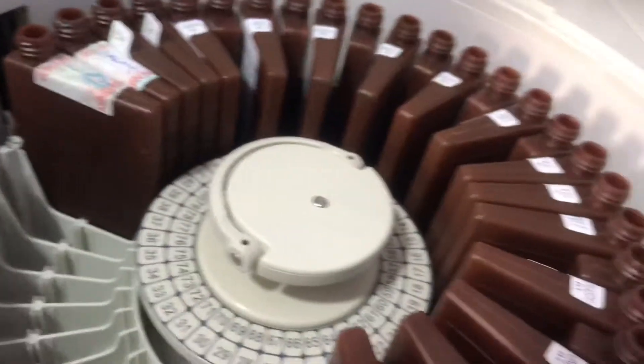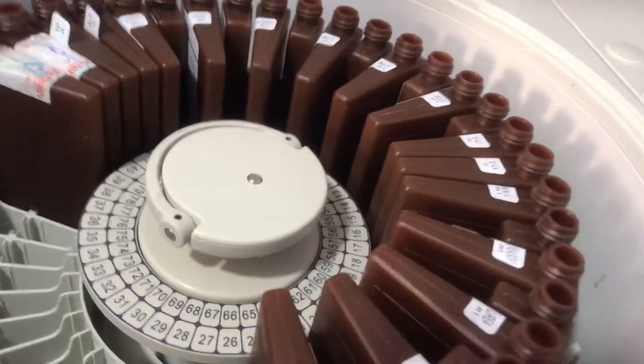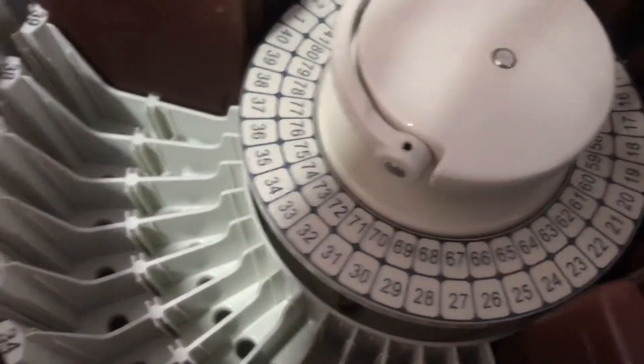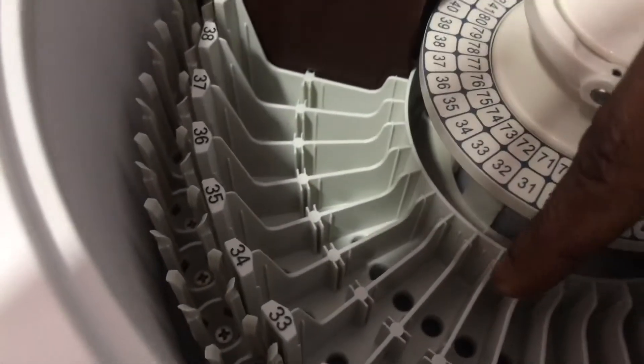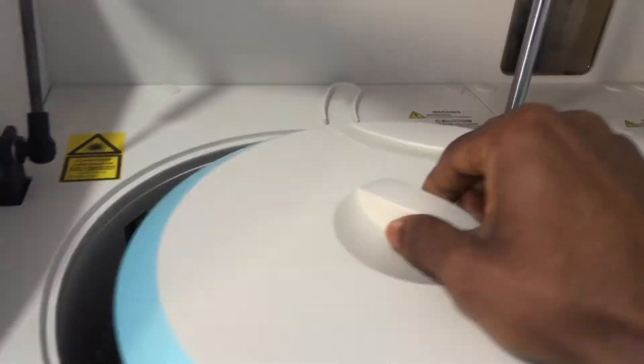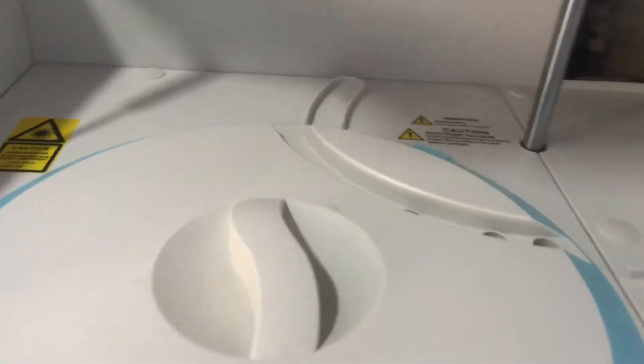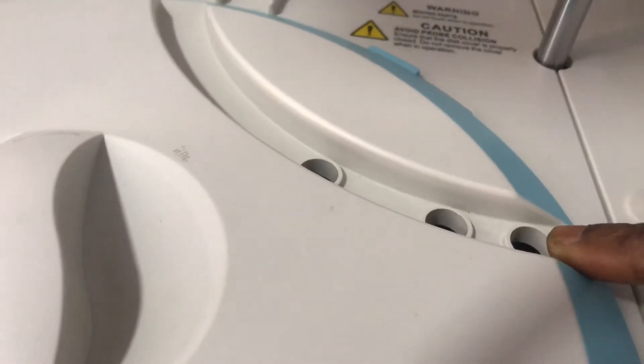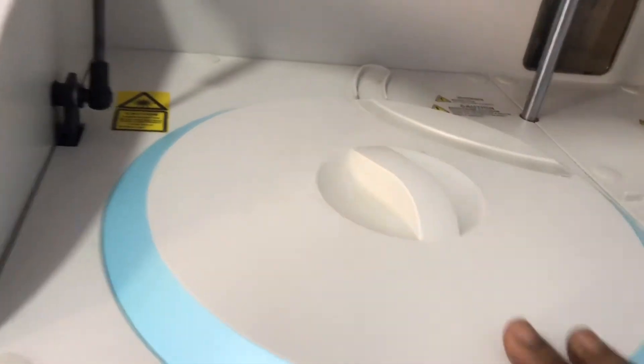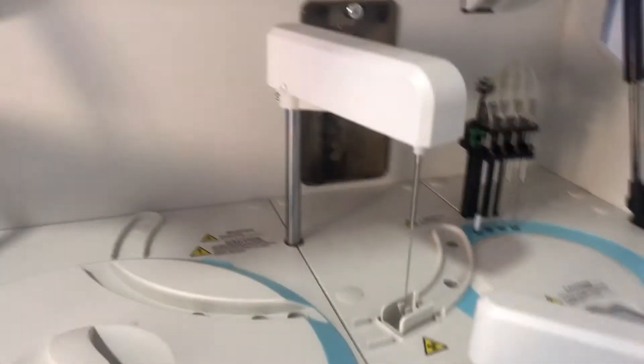And then we have the middle ring which holds the reagents, and then we have an inner ring. When you quickly close it with a cover, you realize there's a hole here—this is the outer ring, this is the middle ring, and this one will be the inner ring.